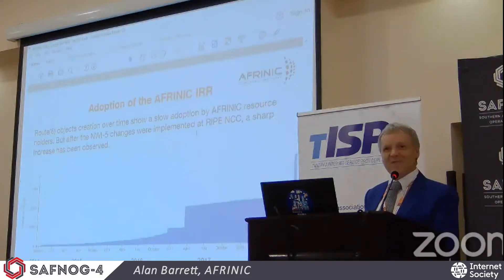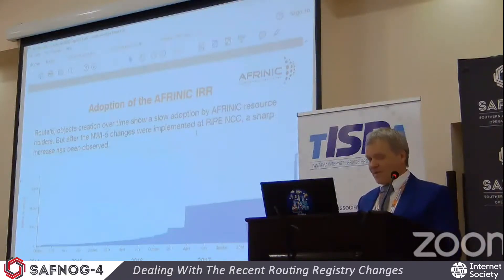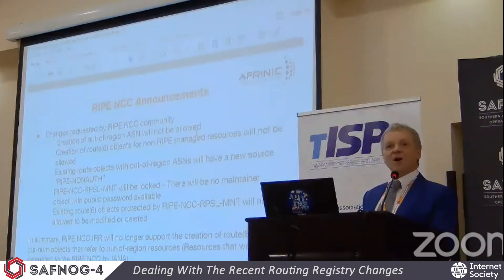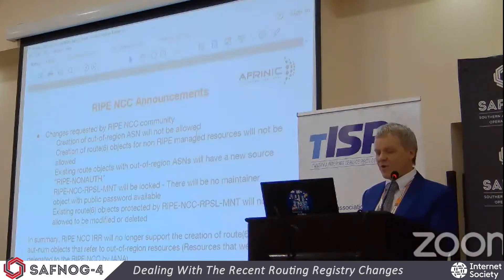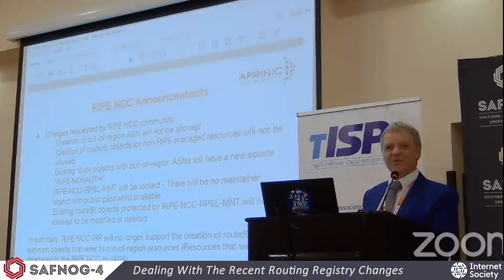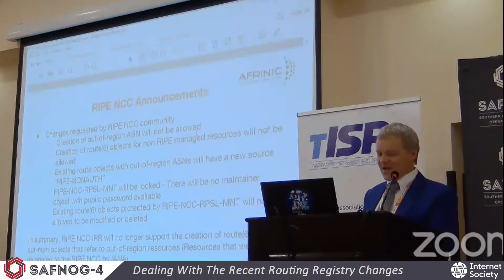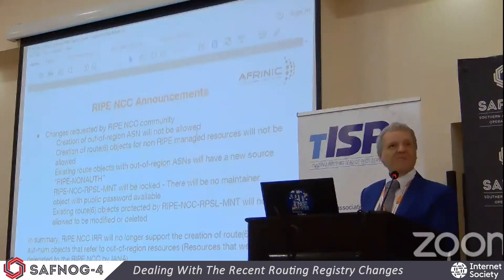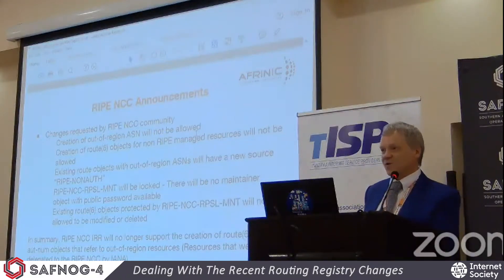There was a sudden jump the day after RIPE made their changes. So what has RIPE done? In the past, the RIPE routing registry was open to everybody — anybody could register things in the RIPE registry. It didn't matter if you were a RIPE member or not, it didn't matter which RIR your address space came from. There was a special maintainer with a well-known password. In 2017 they decided to change that: they're removing access to the shared password and removing permission to register address space which doesn't come from RIPE.